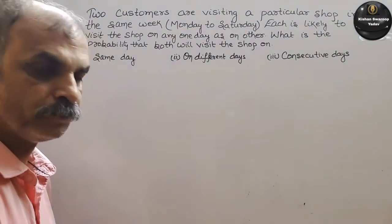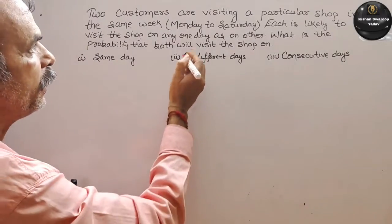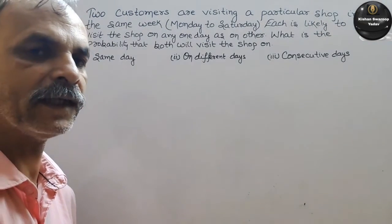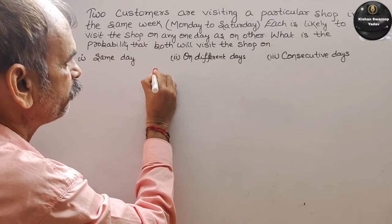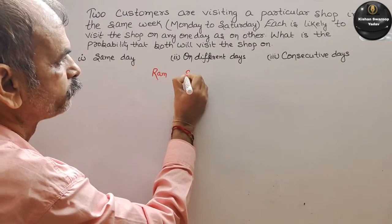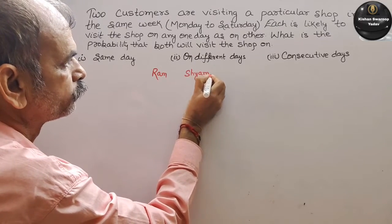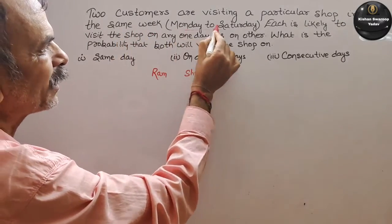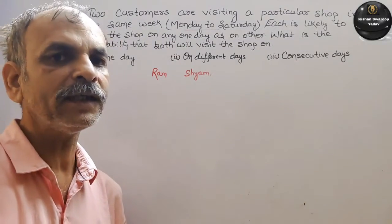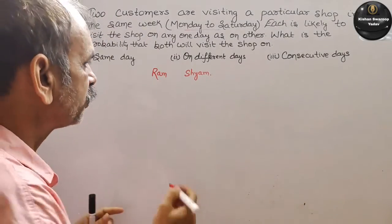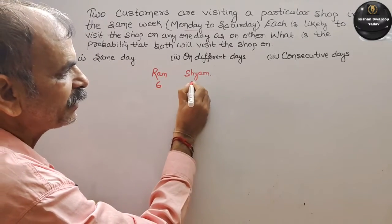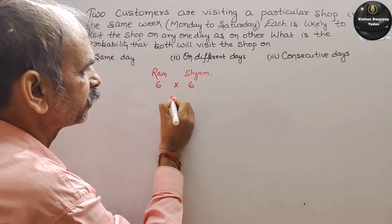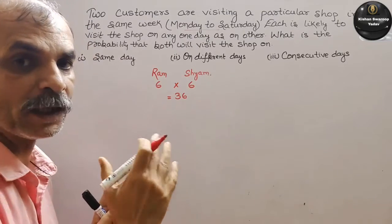तो इसको समझो — दो कस्टमर हैं, suppose two customers: one is Ram, another is Shyam. इसने बोला है कि ये दोनों week में Monday to Saturday ही जा सकते हैं. That means number of days कितने हो गए? Six days. तो Ram six days जा सकता है और Shyam भी six days जा सकता है. तो total outcomes कितने हो गए? Six into six is equal to 36. ये हो गए आपके total outcomes.